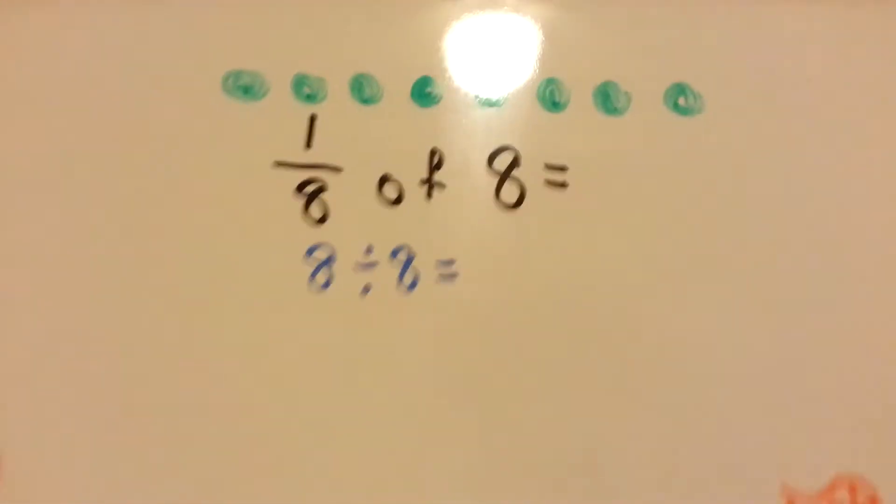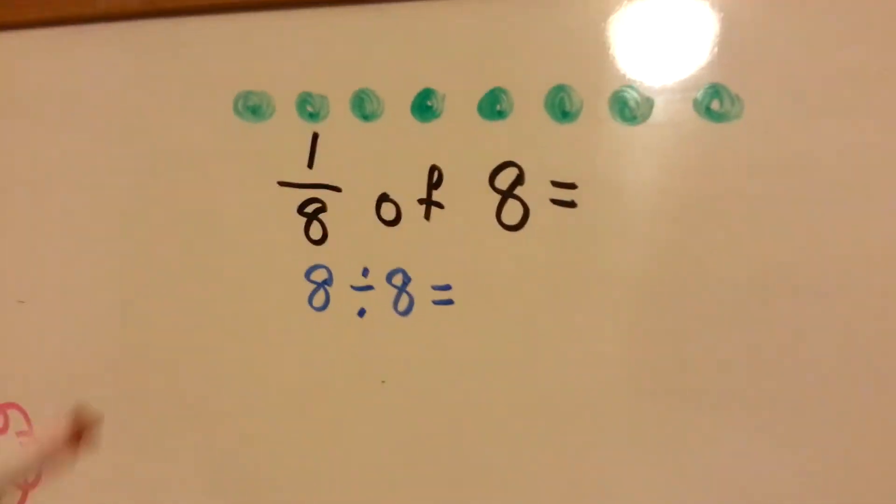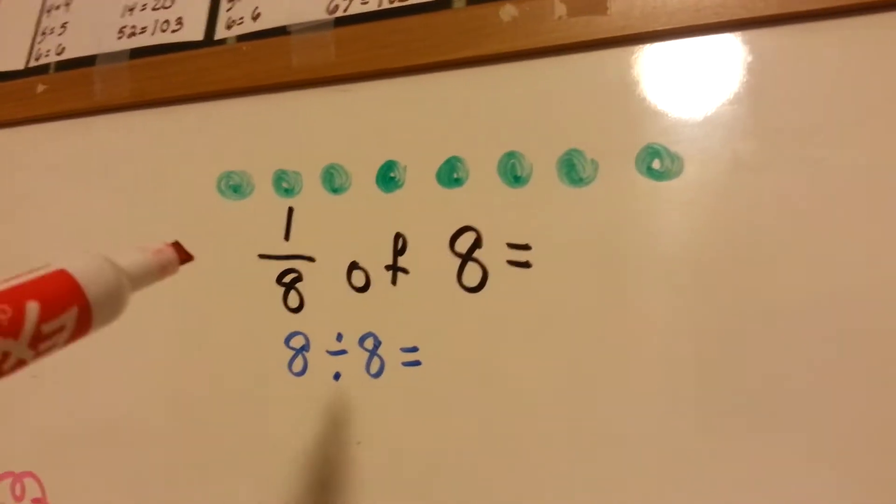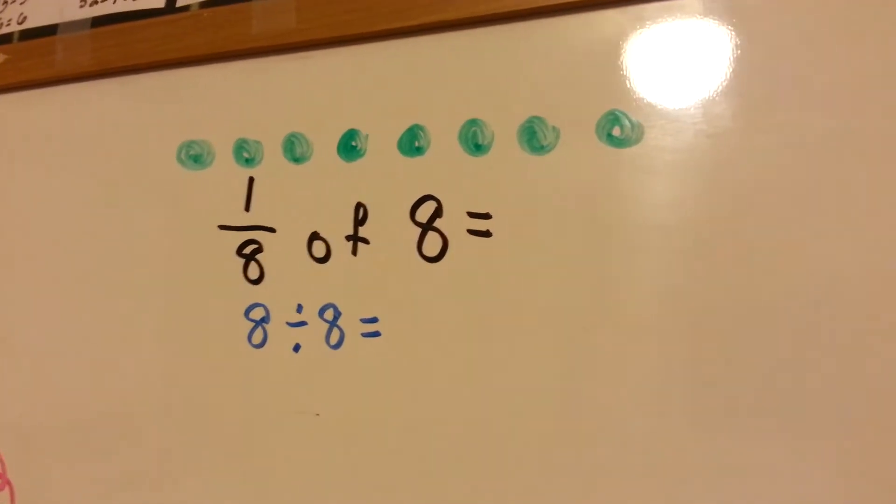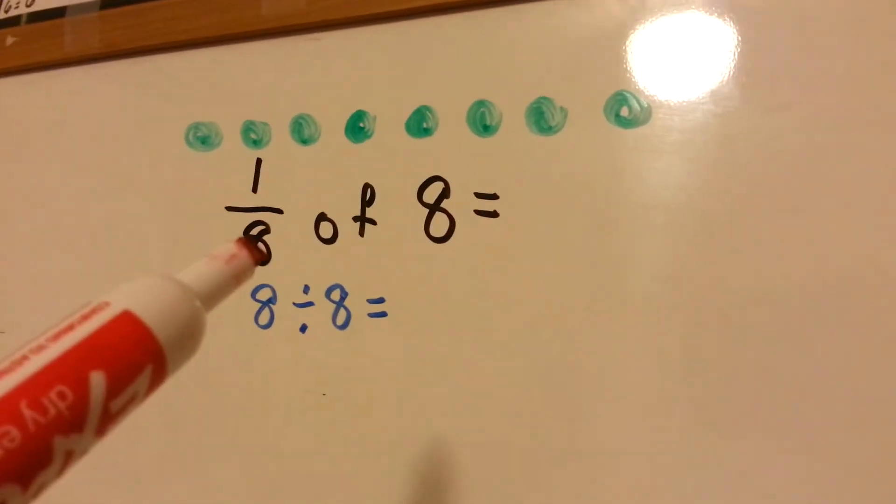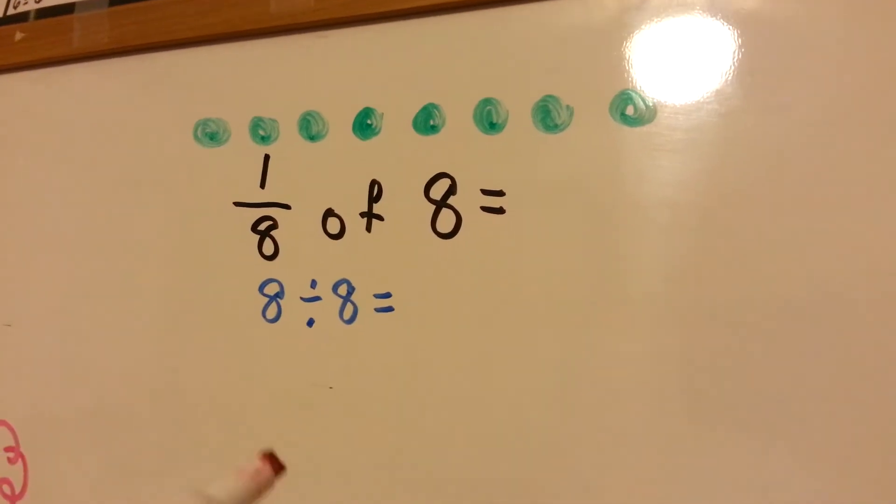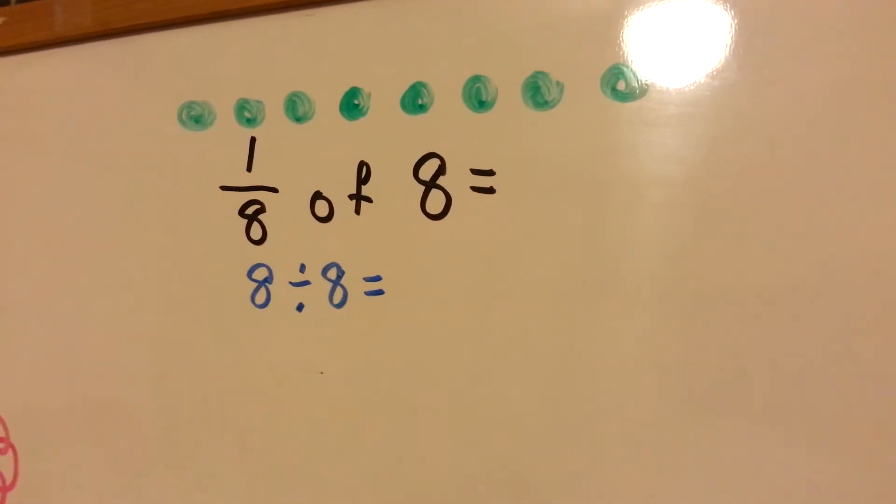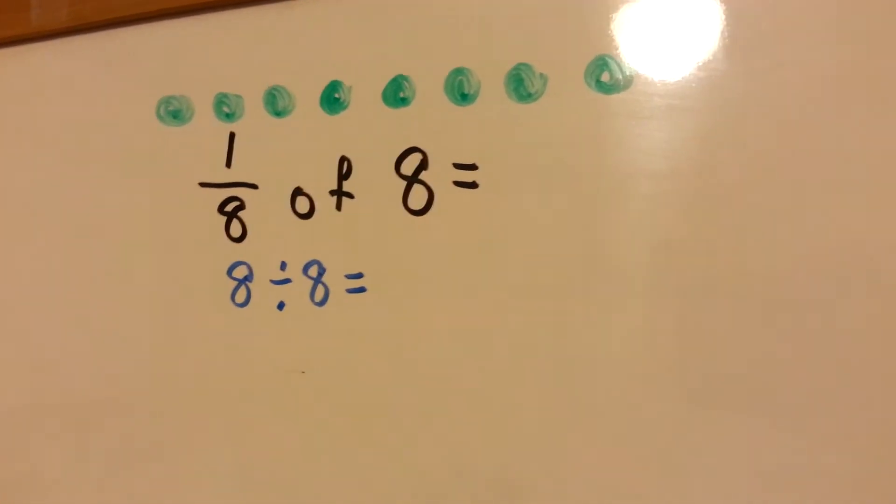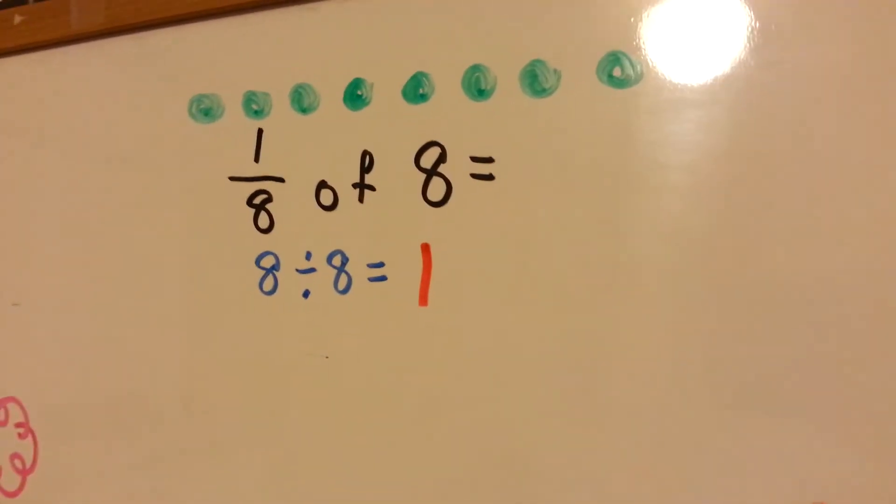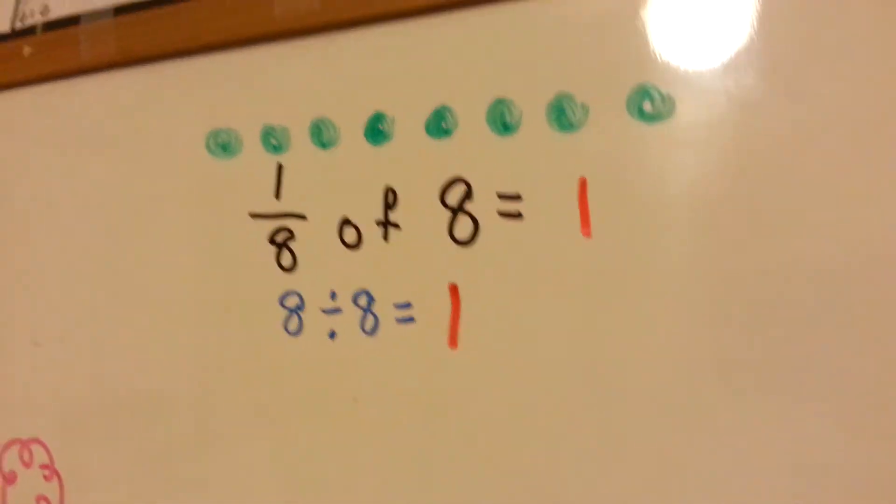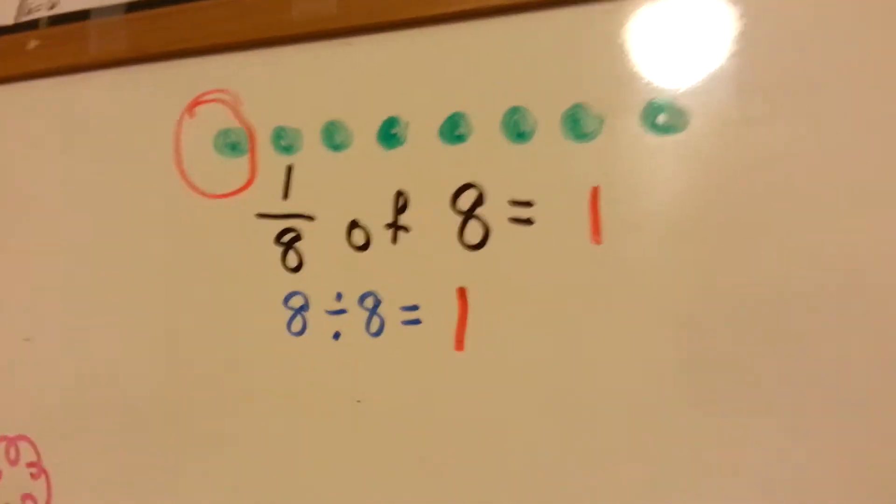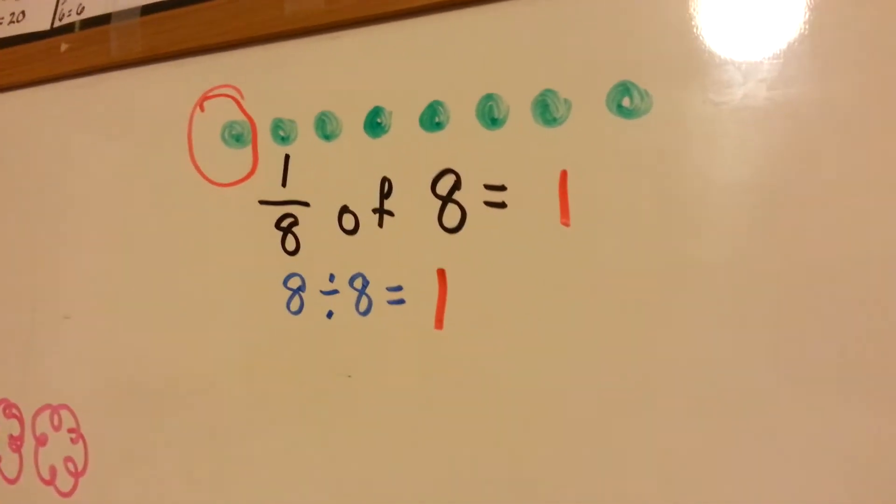Let's take a look at this one. We've got 8 green dots. We need to find an eighth of the 8. So we're going to divide 8 by 8. How many times can 8 fit into an 8? Just one time. So 1 eighth of 8 is 1, and we'll circle 1 green dot. See that?